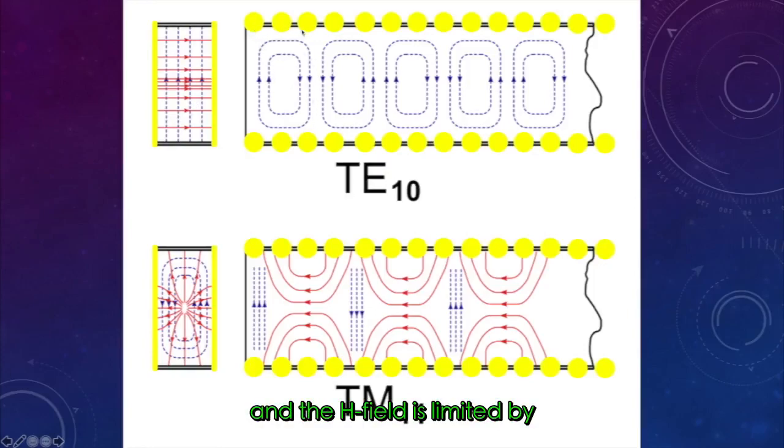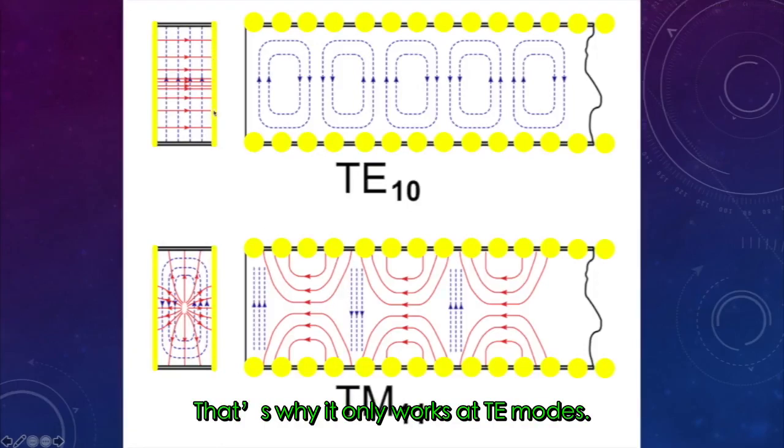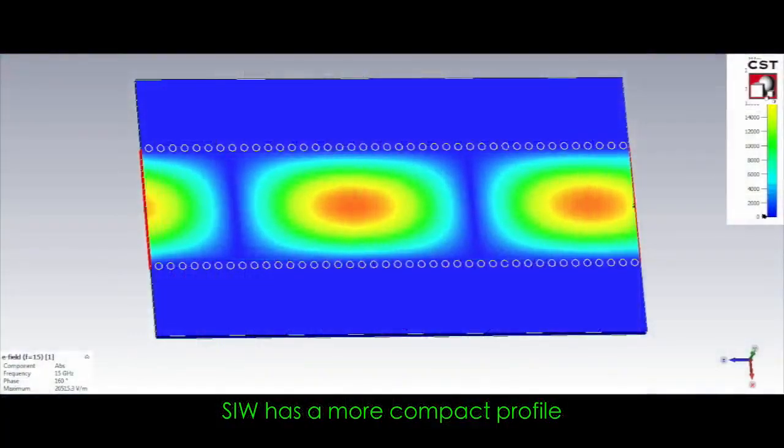For TM mode, EM waves have Ex and Ez components and they will leak from the space between vias. That's why it only works at TE mode.